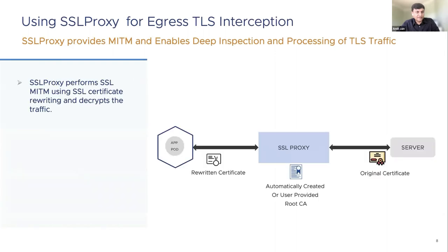As the application tries to connect out to an egress SSL service, SSL proxy intercepts the SSL handshake inline. It then performs the TLS handshake with the destination server on behalf of the application and rewrites the server-provided certificate to generate an ephemeral certificate toward the application using a local root CA, which can be user-provided or automatically created.